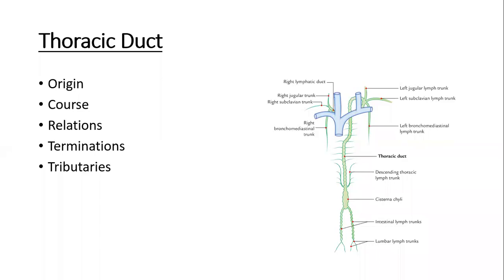The thoracic duct ascends within the posterior mediastinum, running upward in the thoracic cavity alongside the thoracic aorta and the azygous vein. The thoracic aorta is situated on the left side of the thoracic duct, and the azygous vein is on the right side. So the thoracic duct lies between the thoracic aorta on its left and the azygous vein on its right.